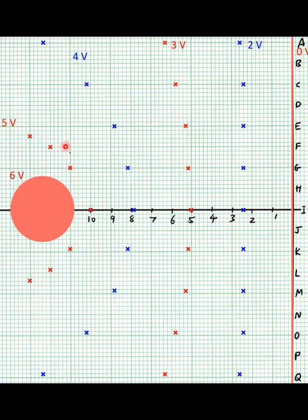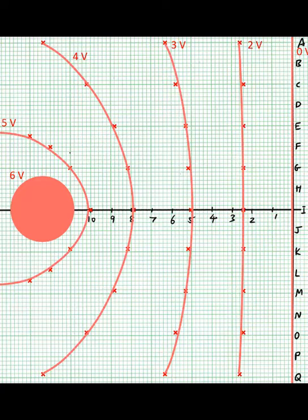If we have mapped out enough points then we can simply join the points with the same potential using a smooth curve and we will obtain the equipotential lines. And they look something like this.